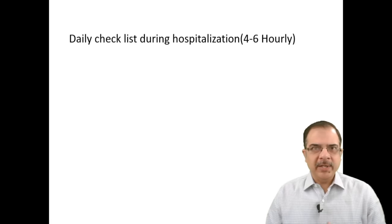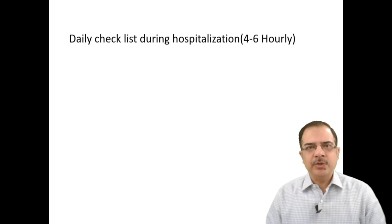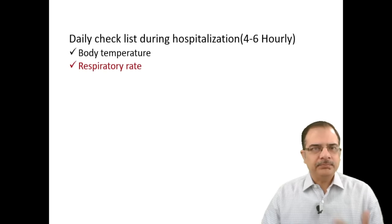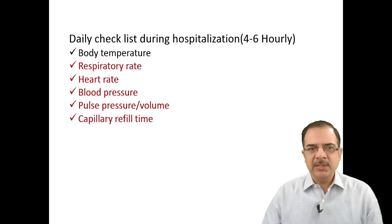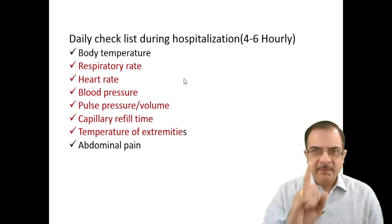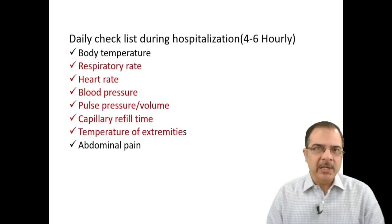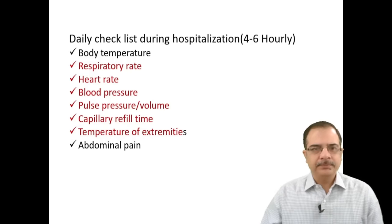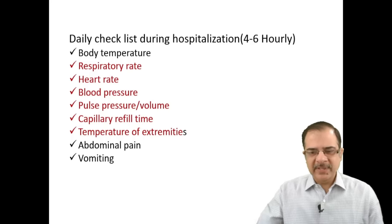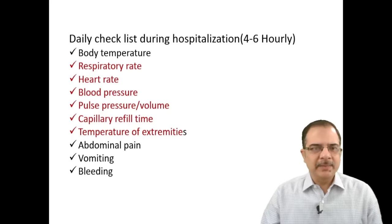During hospital stay, a monitoring checklist should be assessed every 4 to 6 hours minimum, including body temperature, respiratory rate, heart rate, blood pressure, pulse pressure, pulse volume, capillary refill time, extremity temperature, and abdominal pain. Critical parameters shown in red should ideally be assessed hourly, depending on hospital resources. Vomiting episodes and bleeding episodes should also be tracked.